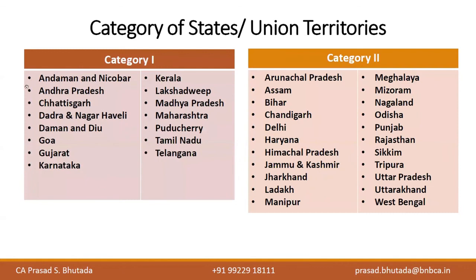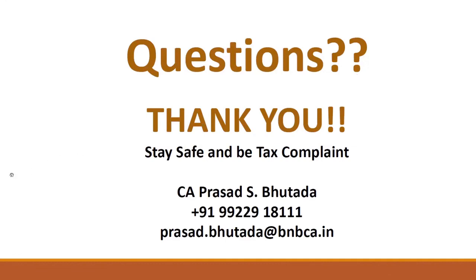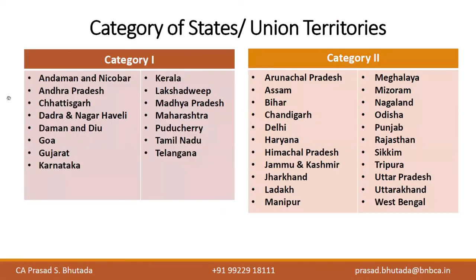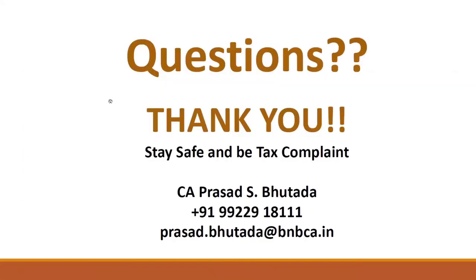For state categories affecting due dates: Category 1 states (southern and central regions) have due dates two days earlier than Category 2 states (northern, central-northern, and northeastern regions). This distinction exists due to the heavy server load from large filing volumes. This concludes the basic GST overview covering what freelancers and remote workers need to be aware of.